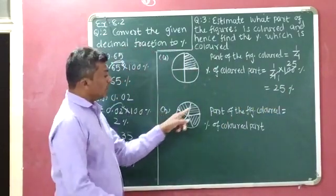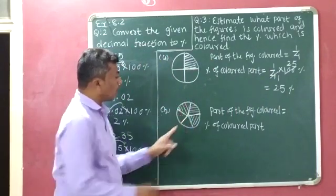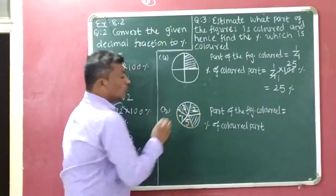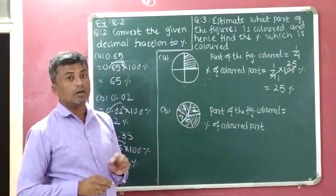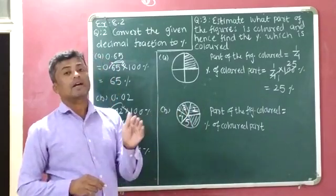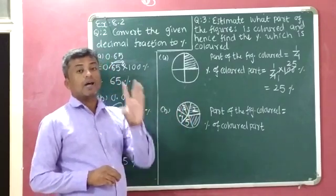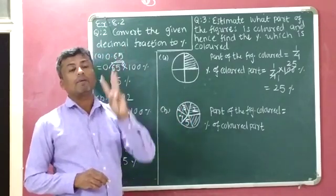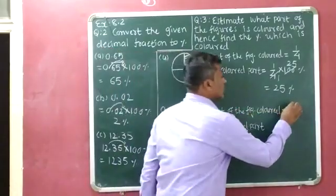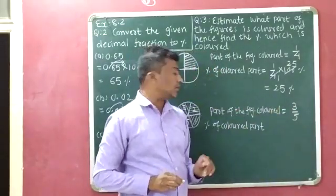Now the second figure. Counting the parts: 1, 2, 3, 4, 5 — total 5 parts are available. Out of 5 parts, see here: 1, 2, and 3 — three parts are shaded or colored. So out of 5 parts, 3 parts are colored. The part of the figure that is colored is equal to 3 by 5.